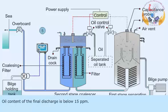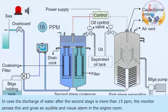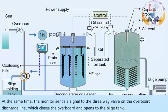The oil content of the final discharge is below 15 ppm. In case the discharge of water after the second stage is more than 15 ppm, the monitor senses this and gives an audible and visual alarm in the engine room. At the same time, the monitor sends a signal to the three-way valve on the overboard discharge line, which closes the overboard and opens to the bilge tank.